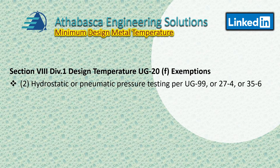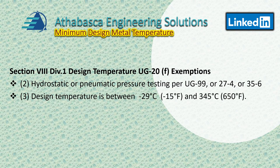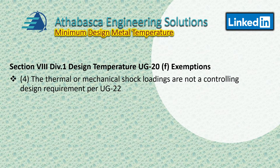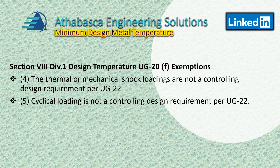The second condition is it must be hydrostatically or pneumatically pressure tested per UG99, or mandatory/non-mandatory appendices 27-4 and 35-6 found at the back of the code. Third, design temperature must be between minus 29 and 345 degrees centigrade. Fourth, thermal or mechanical shock loadings are not a controlling design requirement per UG22. Fifth, cyclic loading is not a controlling design requirement per UG22. If you meet all five criteria, the design qualifies for an exemption.